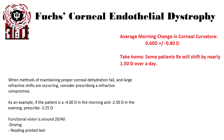You might think you can over-minus some of these patients and they'll accommodate through it, but this is largely a disease of people over the age of 60 who do not have accommodation, so over-minusing is not an option for the vast majority. A person under the age of 40 who still has accommodation would have a very severe form of Fuchs to be experiencing these symptoms.